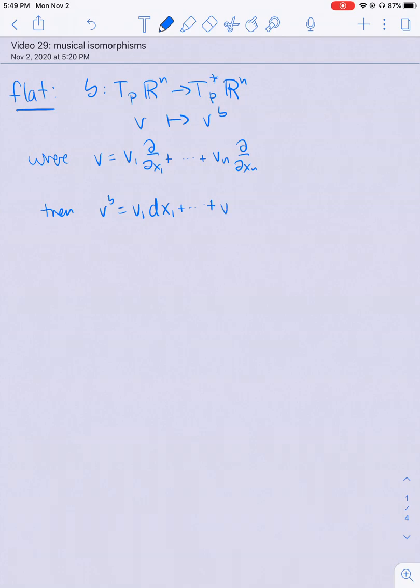So the first one that we're going to be using most frequently is called flat. It's denoted with the flat operator and at a point it's the operator which goes from the tangent space to the cotangent space at that point in R^n and it's going to take a vector to what's called V flat where if V equals V_1 ∂/∂x_1 plus all the way out to V_n ∂/∂x_n then V flat is equal to the same coefficients but now they are the coefficients of the elementary one forms.